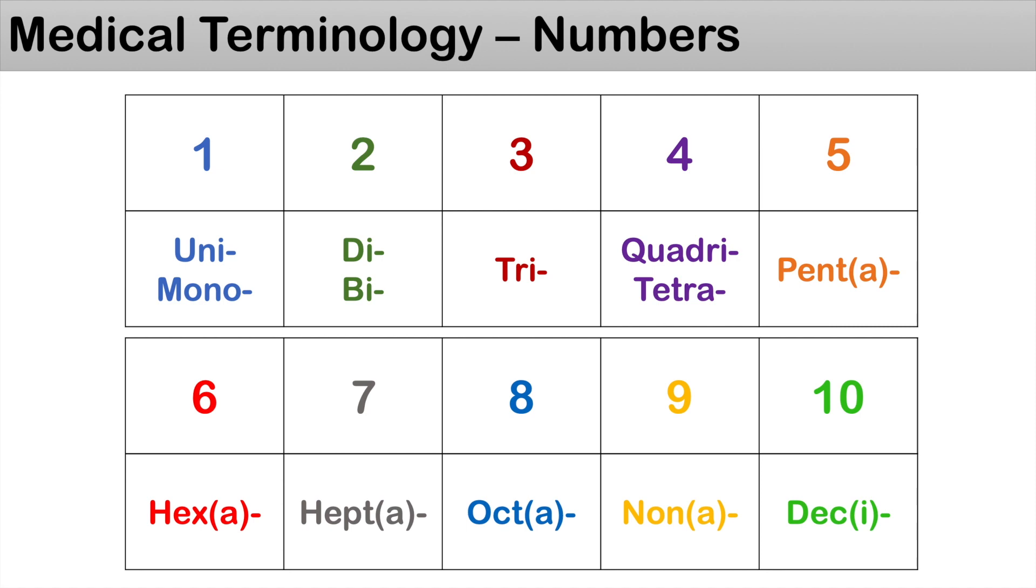For number seven, it's denoted by hept or hepta, so you can think of heptagon, something with a shape with seven sides. For eight, it's denoted by oct or octa, so you can think of octopus.